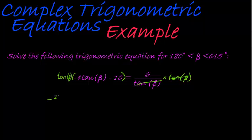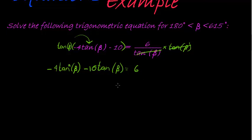On the right hand side it cancels, on the left hand side we now have negative 4 tan β, but two of them because we are multiplying that, there's two factors of tan β, so tan squared β minus 10 tan β is equal to 6.